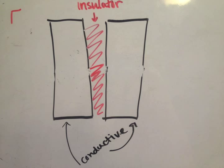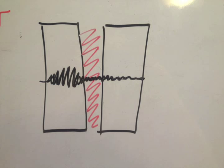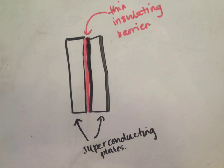Josephson was the first to predict the tunneling of superconducting Cooper pairs. If two superconductors are separated by a thin insulating layer, then quantum mechanical tunneling can occur for the Cooper pairs without breaking up the Cooper pairs.